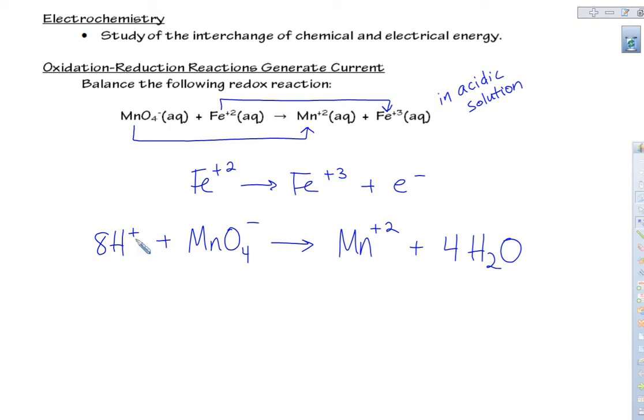All the atoms are balanced. And now we have to do the charge. All we can add is an electron or two or three or four or five. On my reactant side, my total charge is plus seven. My product side, it's a plus two. So let's add five electrons to the reactant side. Now both sides should give me a total charge of plus two.